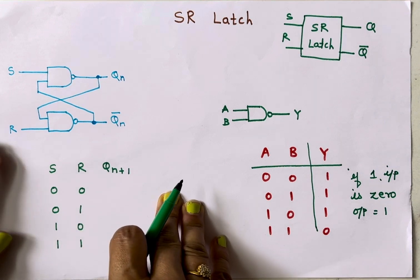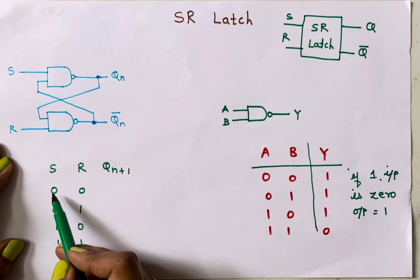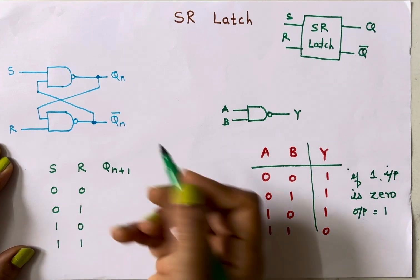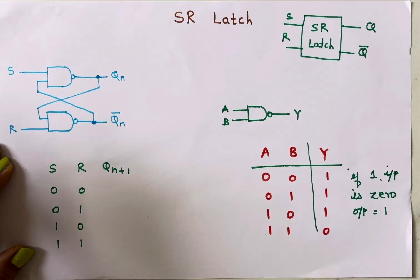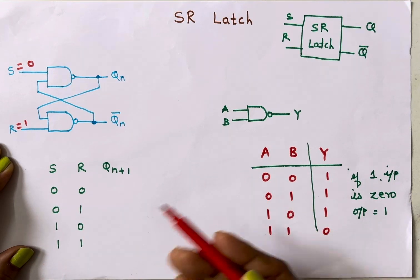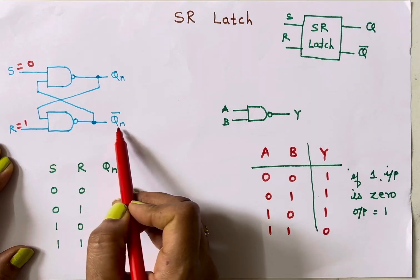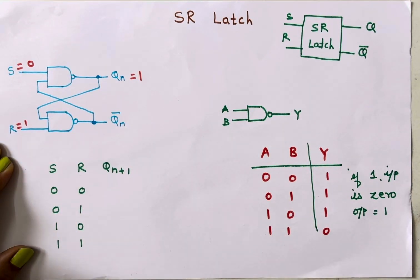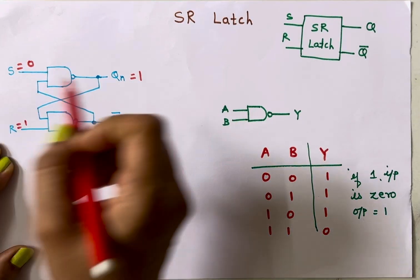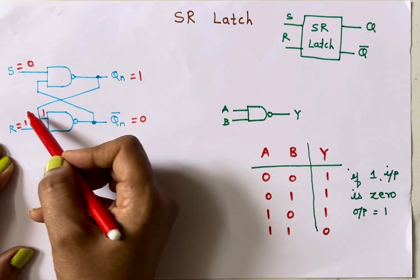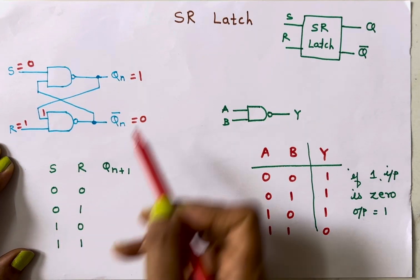Let's start verification of the SR latch. We'll start with the condition S=0, R=1. In a NAND gate, if any one input is zero, we directly say the output is one — we don't check the other input. So here, since S is zero, output Q is one. This one feeds into the second NAND gate, where both inputs are now one, so Q-bar output is zero. For S=0, R=1, Q(n+1) = 1.